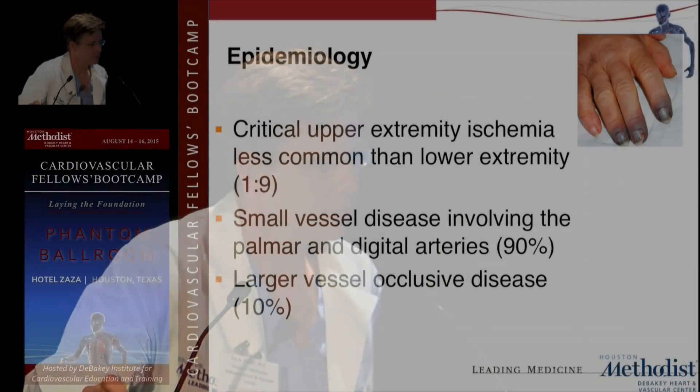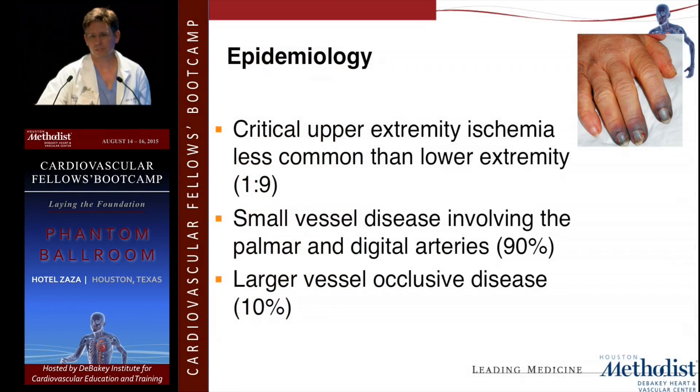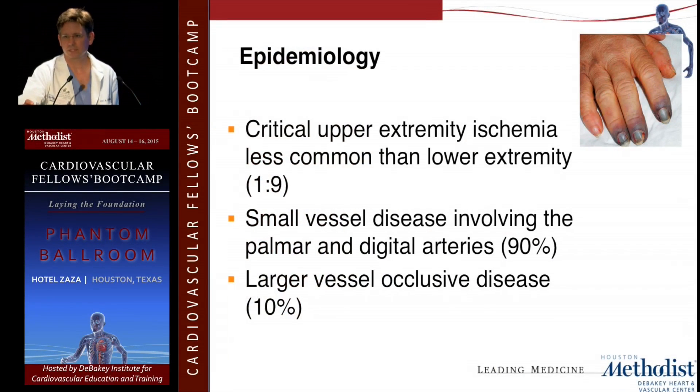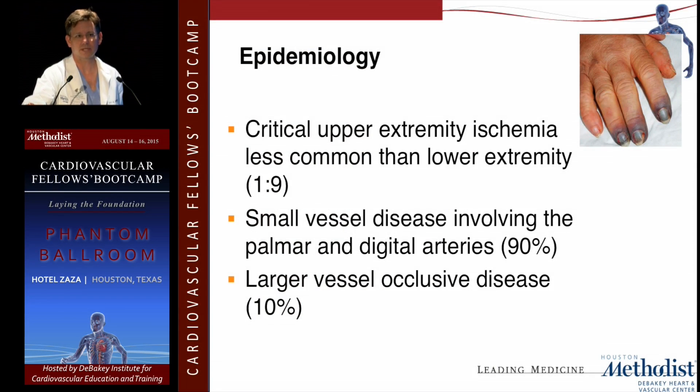Arterial ischemia of the upper extremity is interesting because it's different than the legs. The leg is pretty universal in terms of what's happening — thrombus, arterial disease from atherosclerosis or emboli. The upper extremity is much more diverse. A lot of different things affect the arm, much less likely to be just garden variety atherosclerotic disease. It's really kind of regional and practice-based.